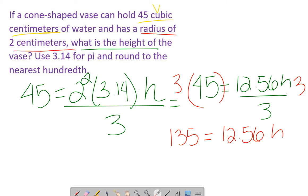Now we're stuck with 12.56 times our variable. We want the variable alone. What's the opposite of multiplying by 12.56? Dividing by 12.56. So let's divide both sides. 12.56 divided out here and here leaves h all by itself.